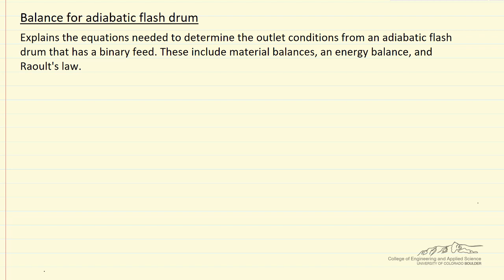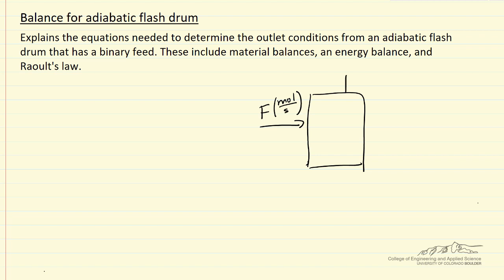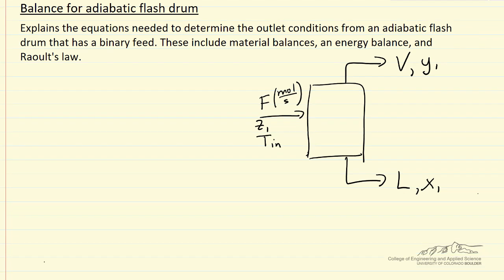Let's look at the situation we're talking about. We have a flash drum with a feed where F is the flow rate in moles per second. Some of this is leaving as vapor V, and some as liquid L. The mole fraction of component one coming in we'll call Z1, in the liquid phase X1, and in the vapor phase Y1. The inlet temperature is Tn, and the outlet temperature is the same for liquid and vapor because we assume they're in equilibrium.